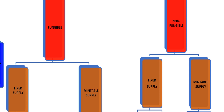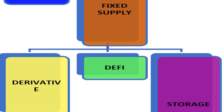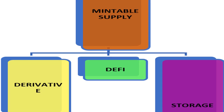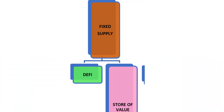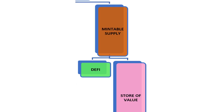Under fungible and non-fungible tokens we have types: fixed supply tokens and mintable supply tokens, applying to both. Under fixed supply fungible tokens we have: derivative fixed supply fungible tokens, DeFi fixed supply fungible tokens, and storage fixed supply fungible tokens. Under mintable supply fungible tokens we have: derivative mintable supply fungible tokens, DeFi mintable supply fungible tokens, and storage mintable supply fungible tokens. For fixed supply non-fungible tokens we have: DeFi fixed supply non-fungible tokens and store-of-value fixed supply non-fungible tokens. For mintable supply non-fungible tokens we have: DeFi mintable supply non-fungible tokens and store-of-value mintable non-fungible tokens.